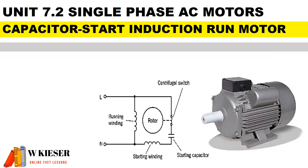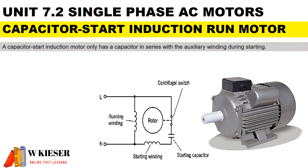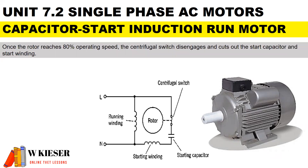Here we have the capacitor start induction run motor, and it's important to note that there is only one capacitor. It has higher torque, and its main application is swimming pool pumps, as an example. A capacitor start induction motor only has a capacitor in series with the auxiliary winding during starting. Once the rotor reaches 80% operating speed, the centrifugal switch disengages and cuts out the start capacitor and start winding.